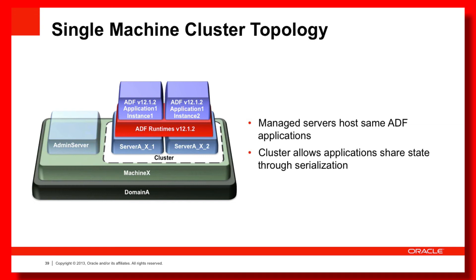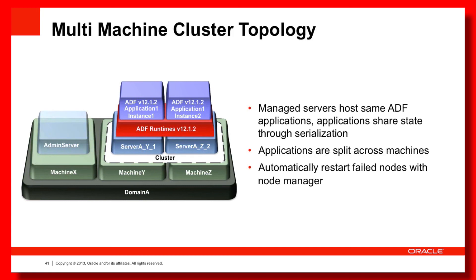There's still a fundamental flaw with this example: the managed servers are all running on the same machine. It's typical in this sort of setup that the different managed servers of a cluster actually run on separate machines or hosts, and even the admin server. So if one machine fails, the other machine with the other managed server has the serialized state and keeps running — this gives us the true failover we want.